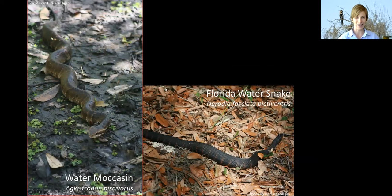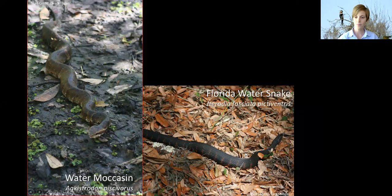Looking at the head again: venomous snakes in general have a blockier, larger triangular-shaped head. You can see that with the water moccasin — that brown eye stripe and large blocky head. The Florida water snake's head is not as distinct; it's more round and kind of just goes right from the body into the head. So it's important to know the difference between venomous and non-venomous snakes.